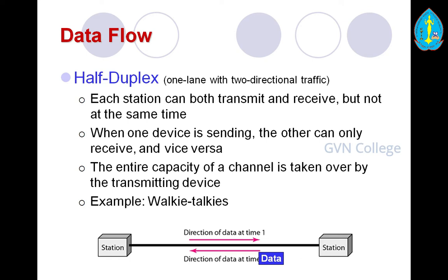With walkie-talkies — which students may have seen in films or used by police — one person talks and ends with 'over,' then the other person can talk in this shared medium. The common transmission path is shared between the two persons.